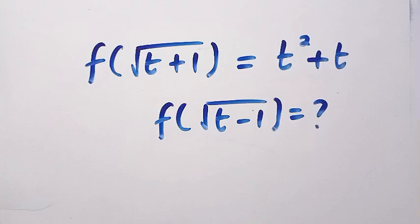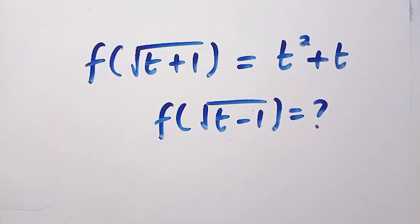Good day viewers, you are welcome. How to solve these nice, interesting functional equations? We have f of root t plus 1 equals t squared plus t. And what is f of root t minus 1? This is what we are interested to find.